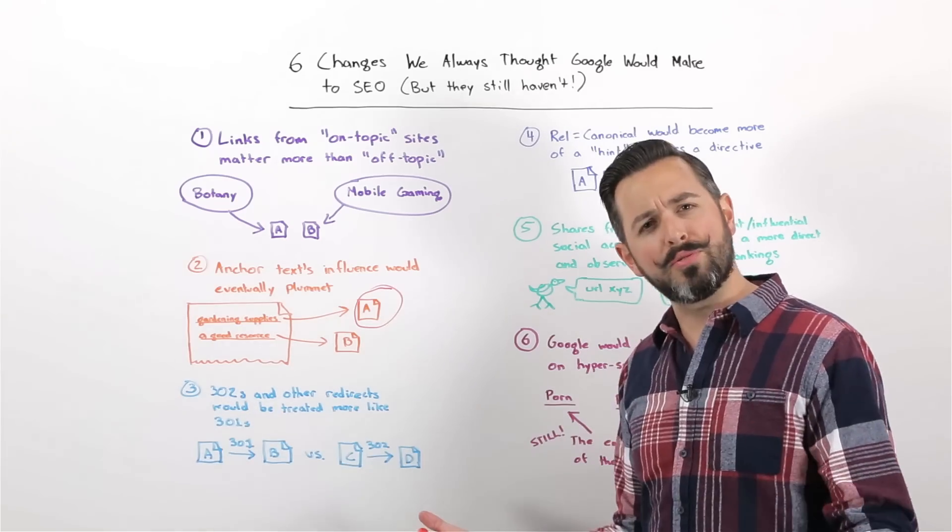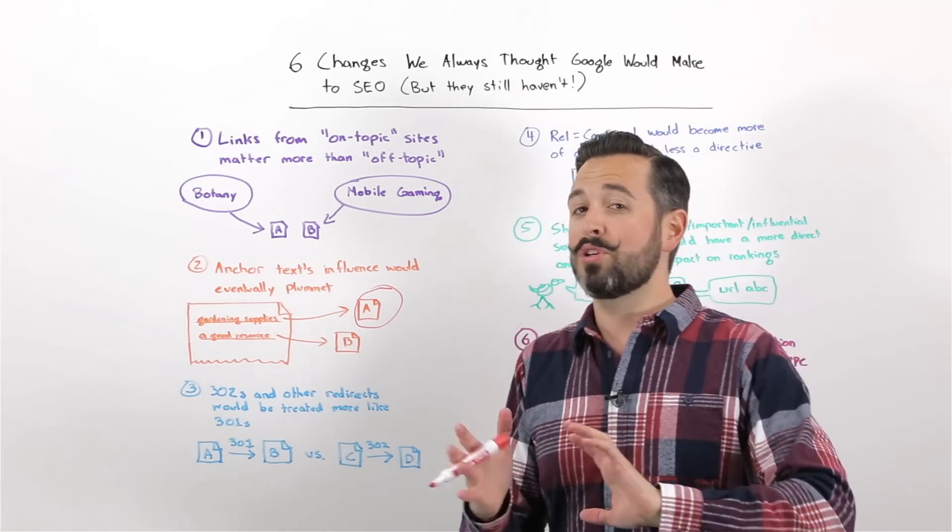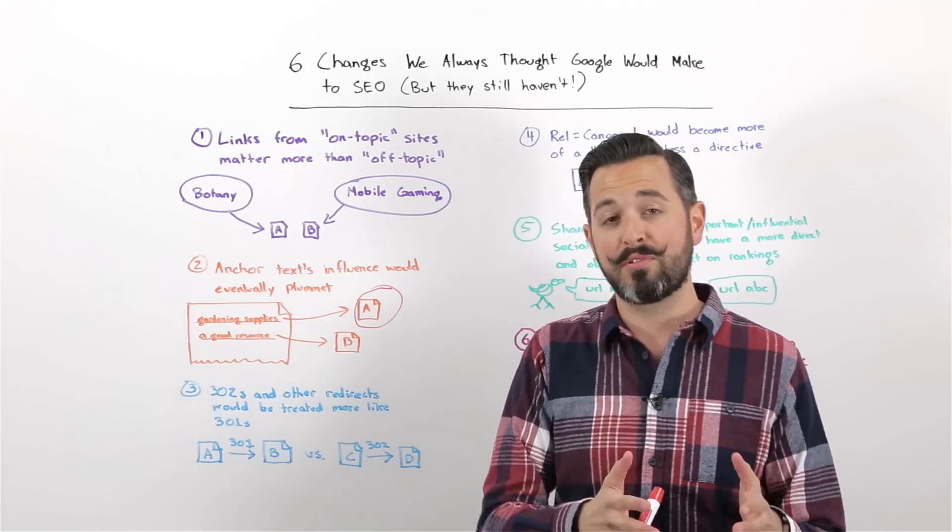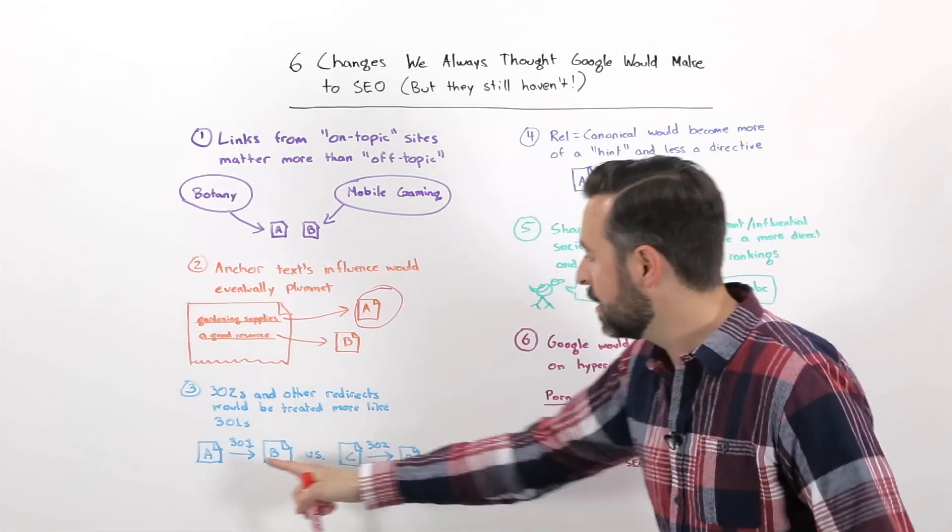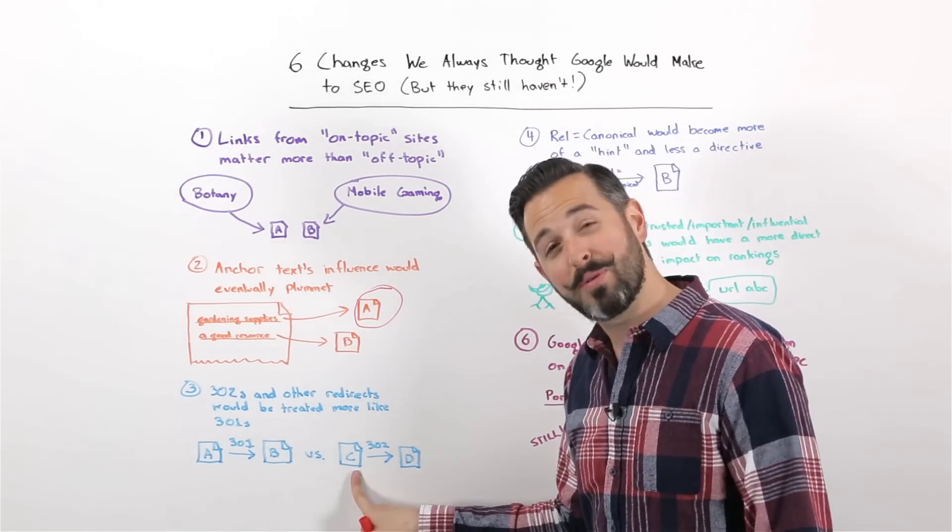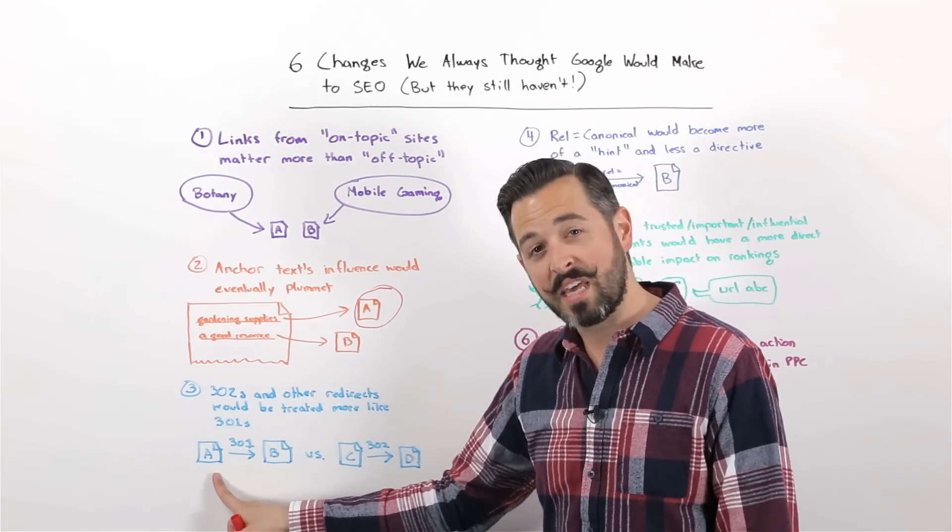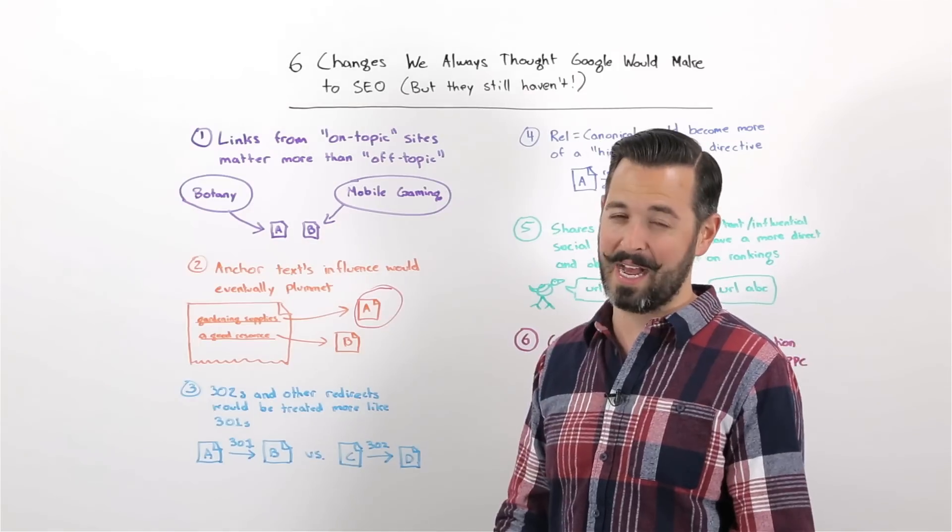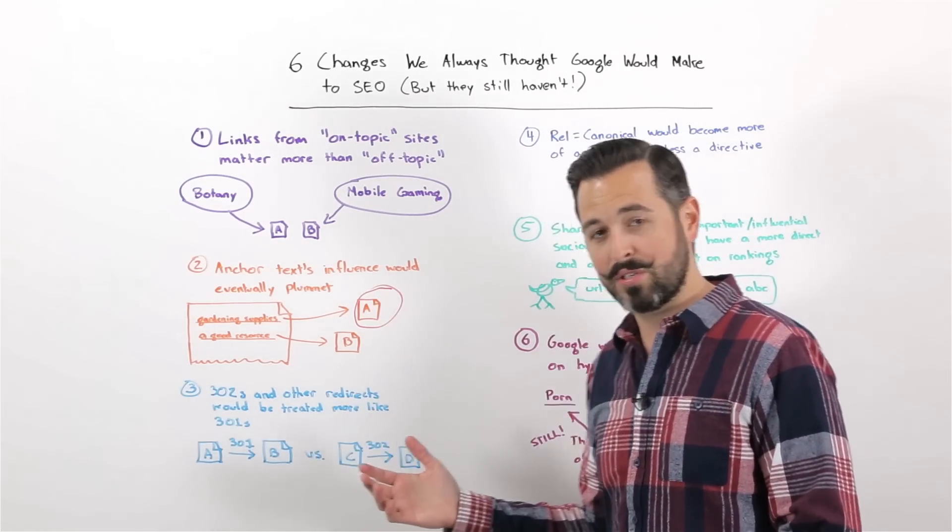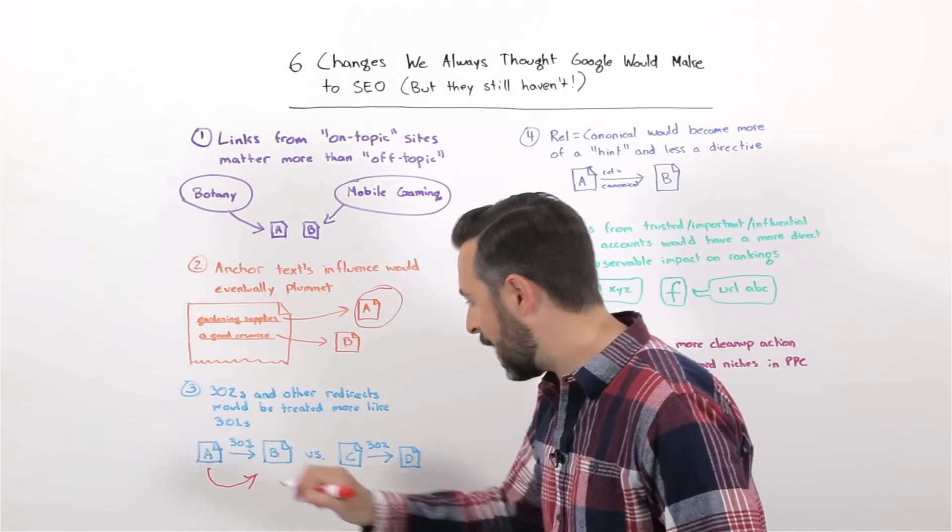Number three, 302s. So 302s have been one of these sort of longstanding messes of the web, where a 302 was originally intended as a temporary redirect, but many, many websites and types of servers default to 302s for all kinds of pages that are moving. So, A 301 redirects to B versus C 302 redirecting to D. Is it really the case that the people who run C plan to change where the redirect points in the future? And is it really the case that they do so more than A does with B? Well, a lot of the time, probably not. But it still is the case, and you can see plenty of examples of this happening out in the search results and out on the web, that Google interprets this 301 as being a permanent redirect. All the link juice from A is going to pass right over to B.